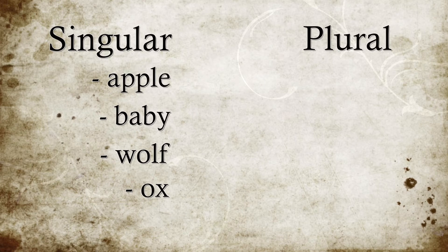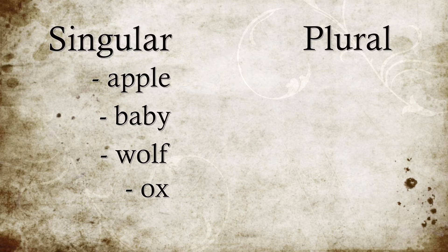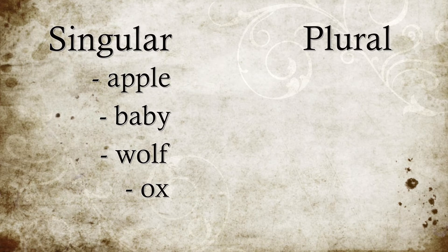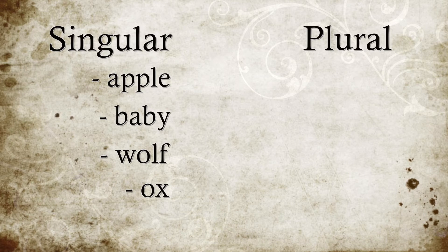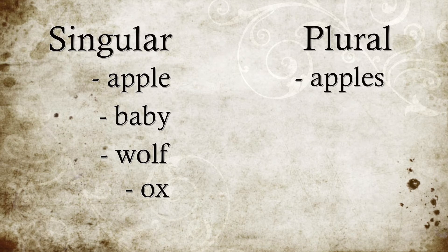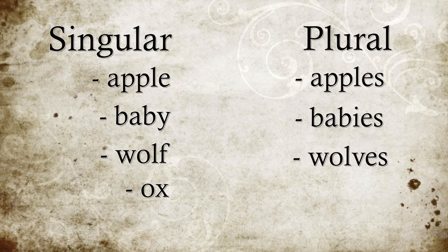Plural nouns refer to more than one or multiple people, places, things, or ideas. For the singular examples I gave, here are the plurals: apple becomes apples, baby becomes babies, wolf becomes wolves, and ox becomes oxen. I will be doing another video on the complexity of why certain words change differently — like why child becomes children, not childs. But I'll get to that in another video.